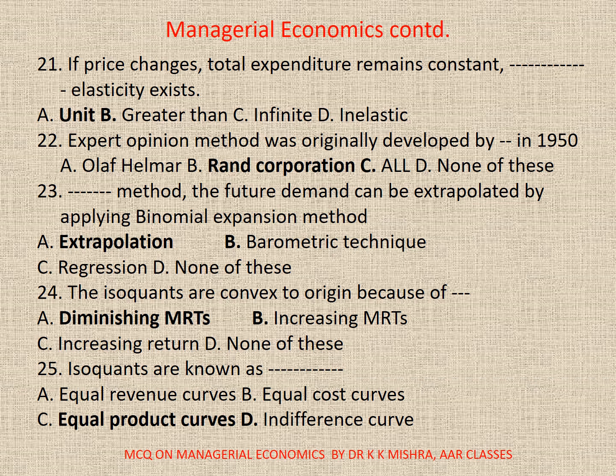25. Isoquants are known as: A. Equal revenue curves, B. Equal cost curves, C. Equal product curves, D. Indifference curves. Correct option is C. Equal product curves.